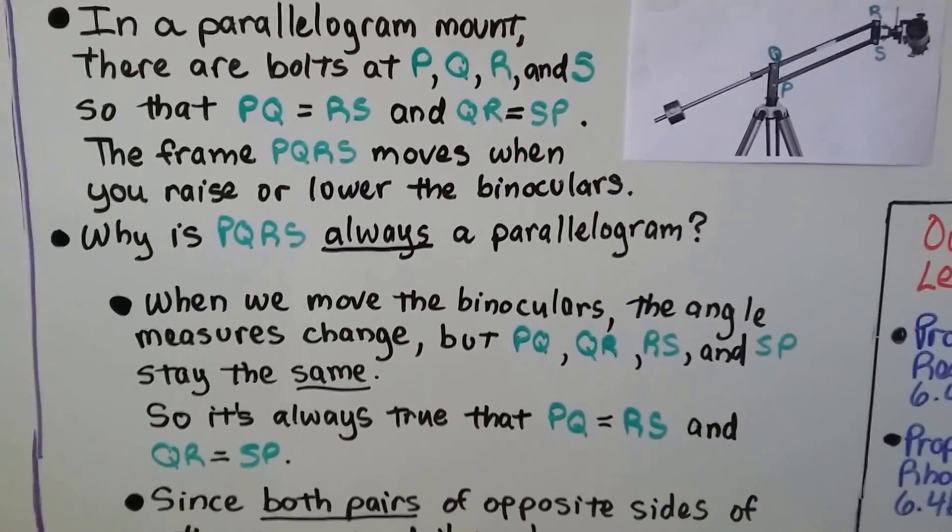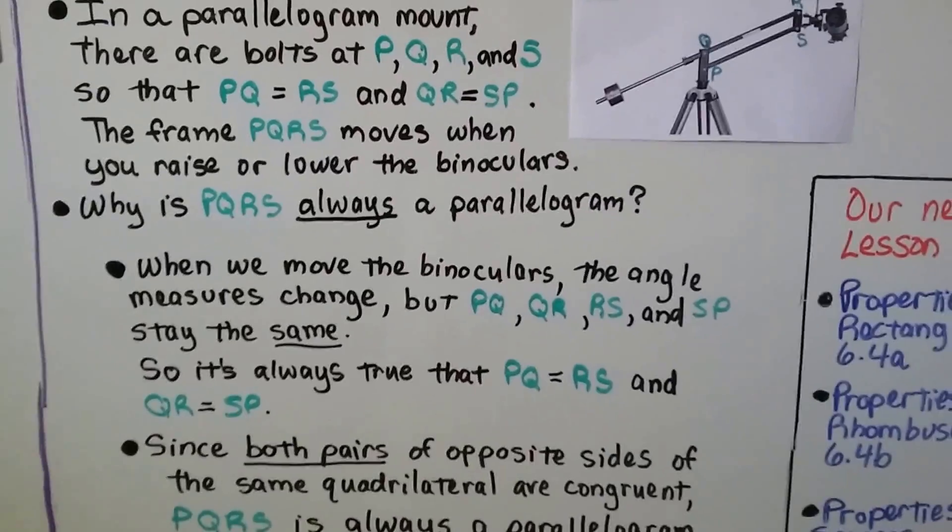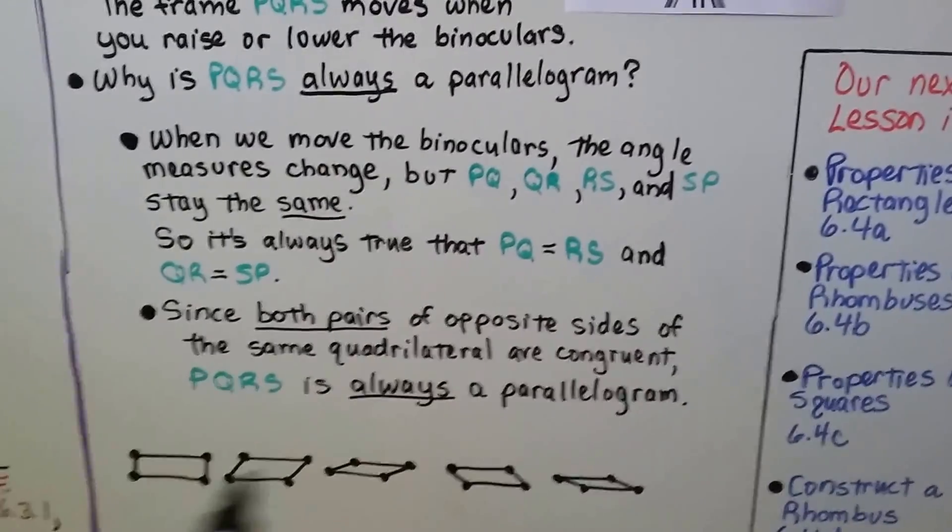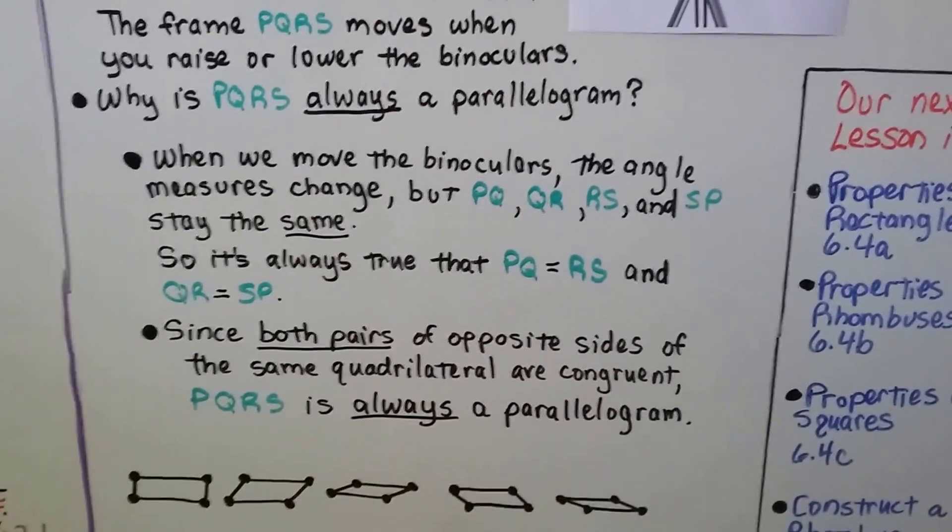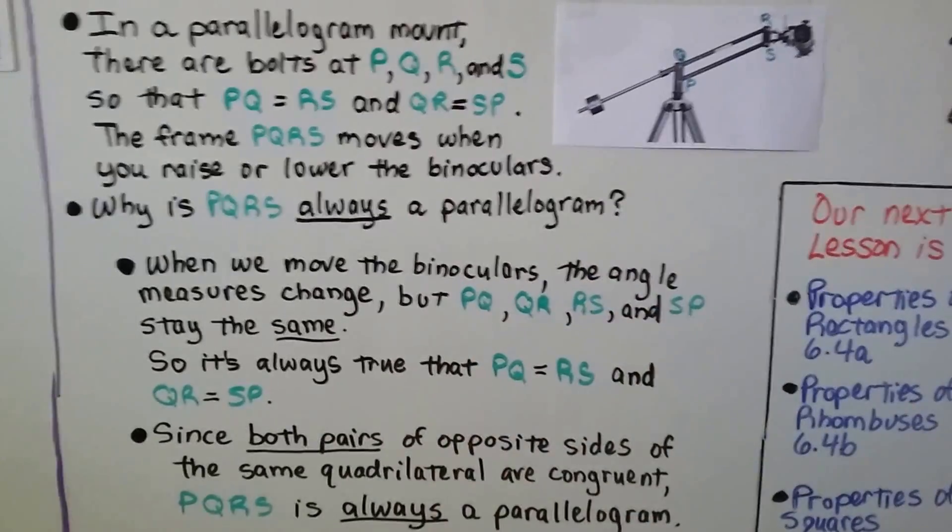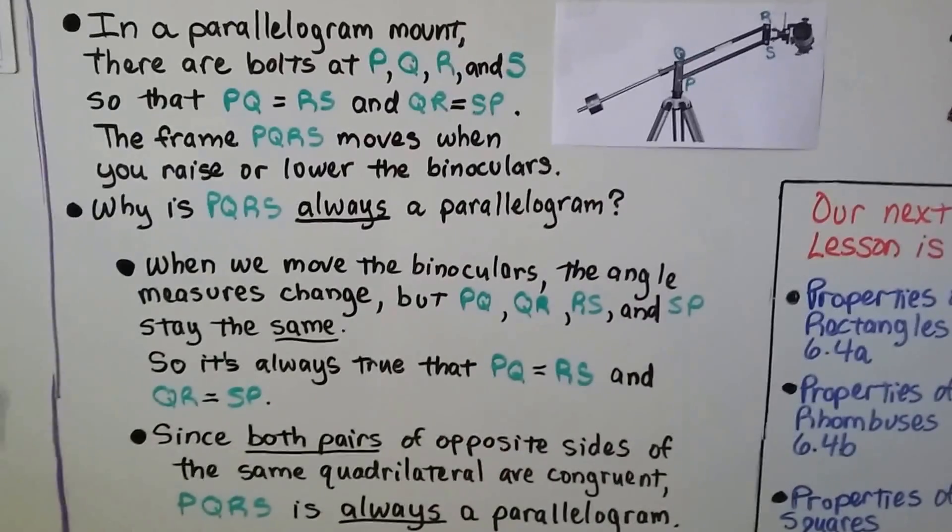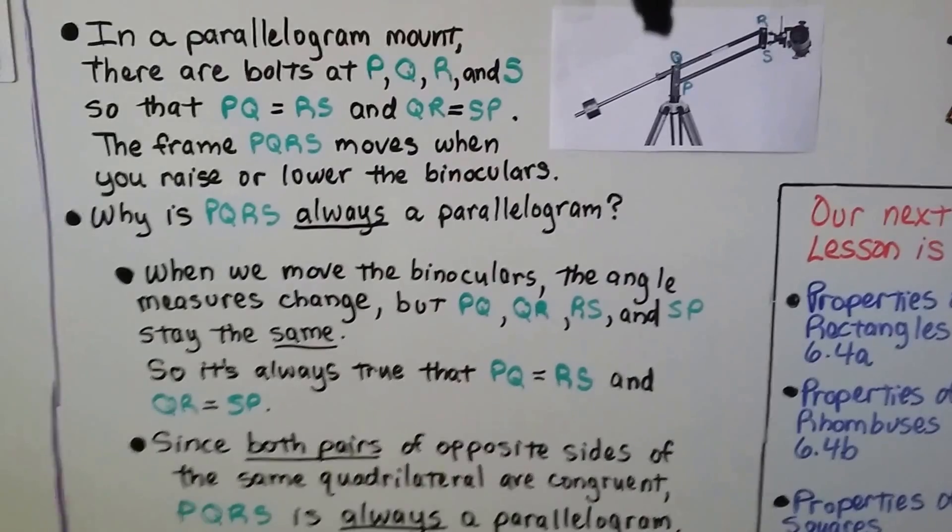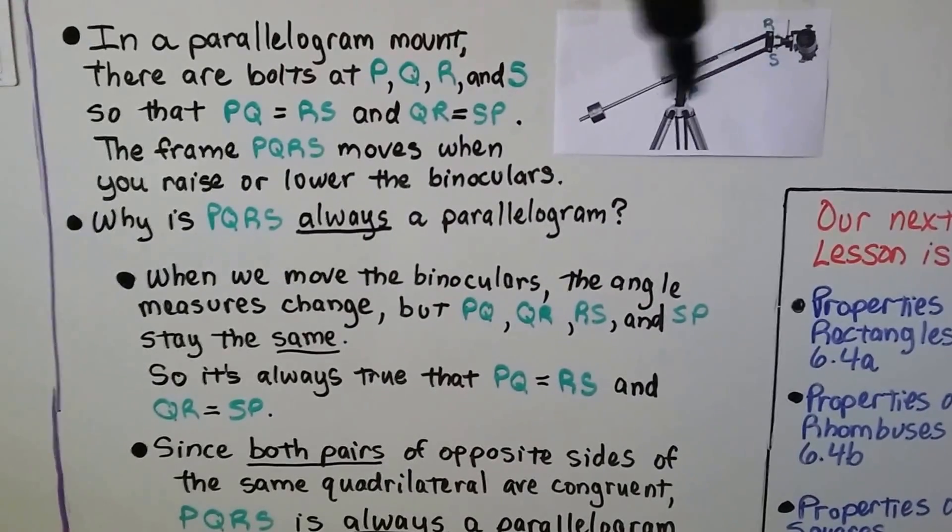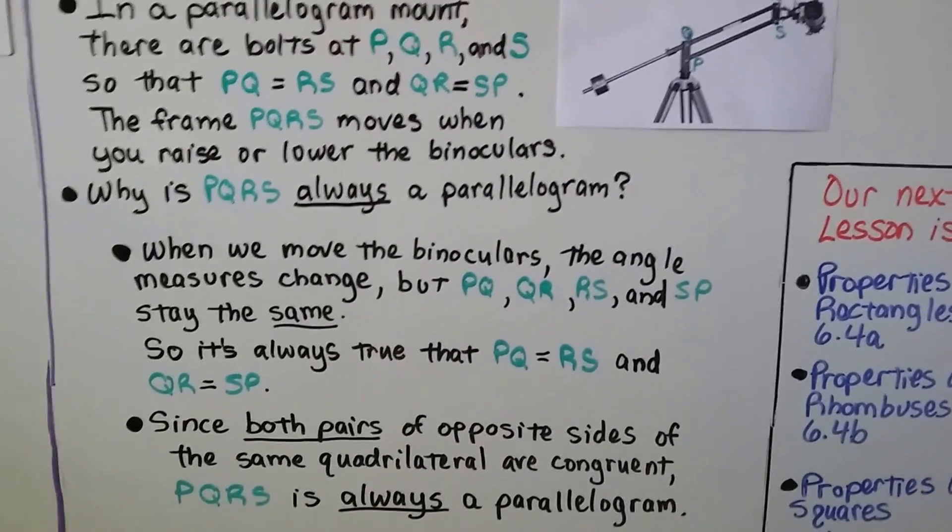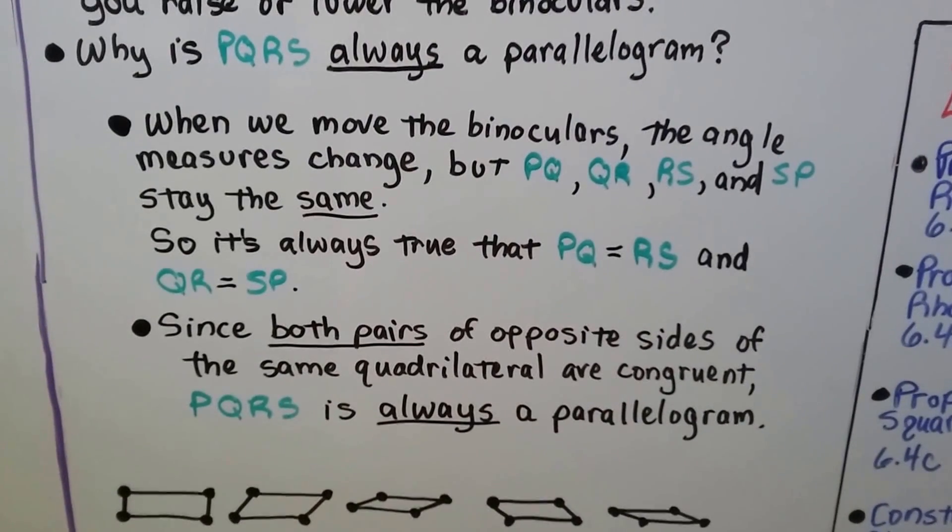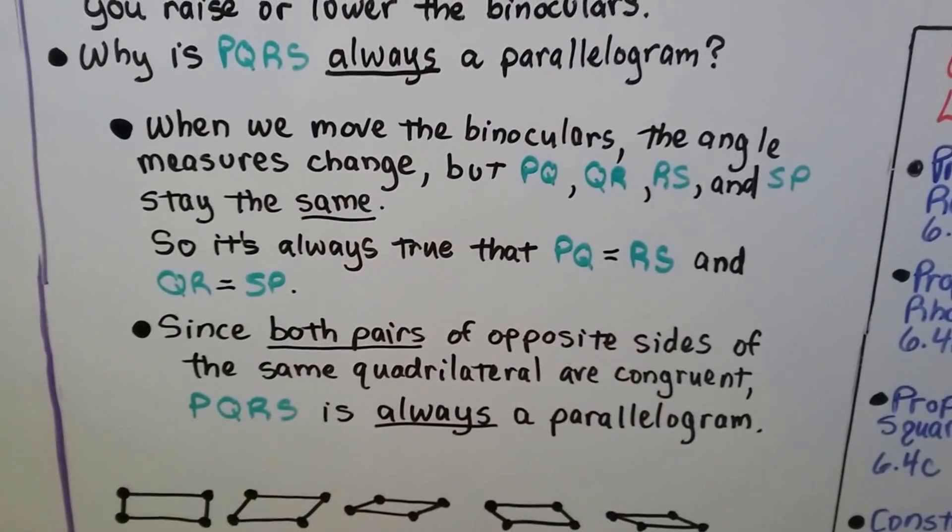So why is PQRS always a parallelogram? Well, when we move the binoculars, the angle measures change, but PQ, QR, RS, and SP stay the same. So it's always true that PQ is equal to RS. This is always equal to this. Those lengths don't change. And it's always true that QR, this top one, is always equal to SP, the bottom one. And since both pairs of opposite sides of the same quadrilateral are congruent, PQRS is always a parallelogram.